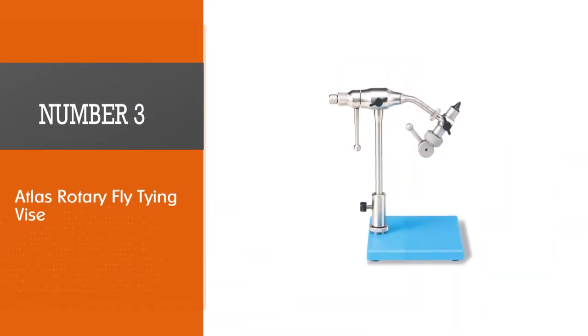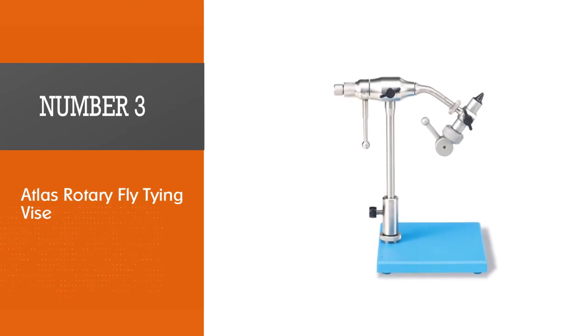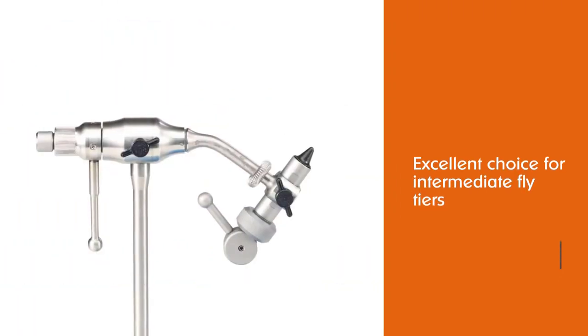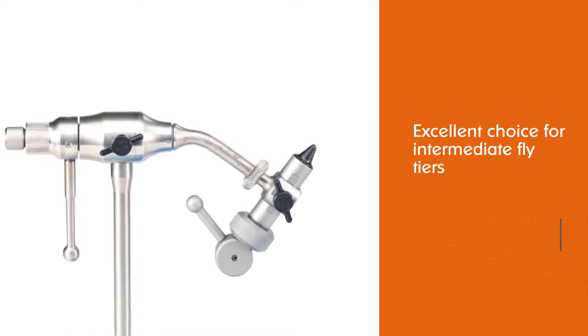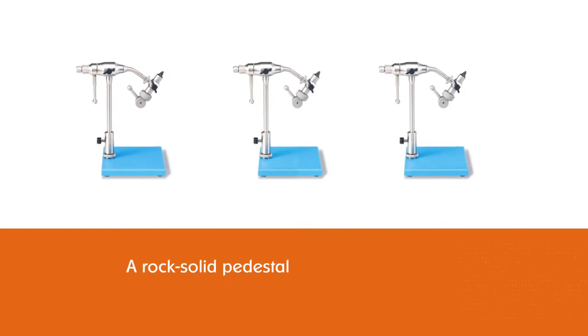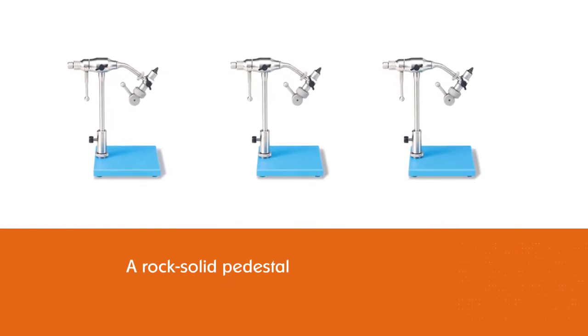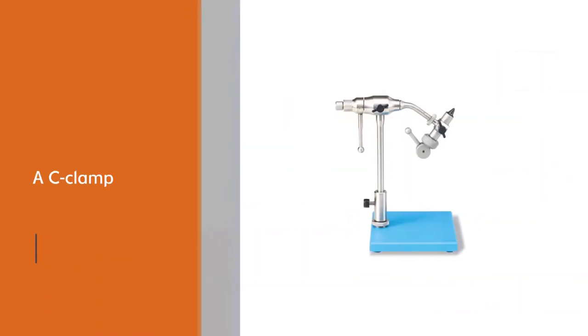Number three: Atlas Rotary fly tying vice. The Atlas Rotary vice is an excellent choice for intermediate fly tiers. Built like a tank, the full rotary vice features a rock-solid pedestal and C-clamp. A material clip is included as well, but no bobbin cradle. Holds hooks in all sizes from 2/0 all the way down to 18.